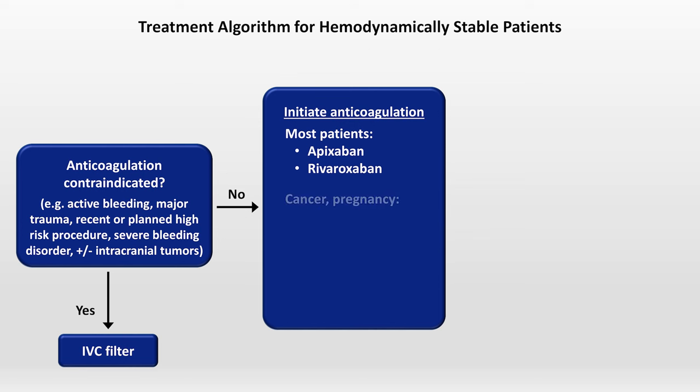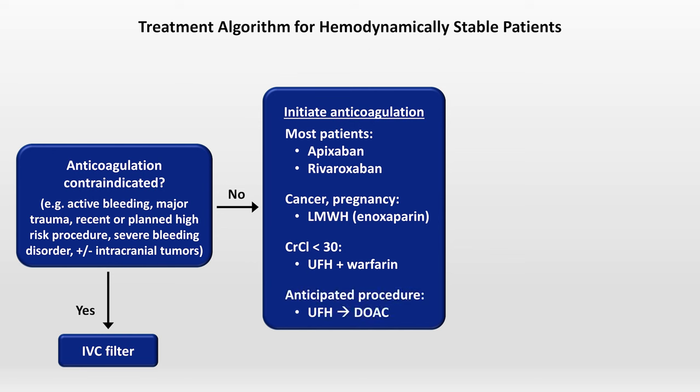In patients with cancer, low molecular weight heparin is believed to be more effective than alternatives. In pregnant patients, low molecular weight heparin is believed to be the safest option. For patients with a creatinine clearance less than 30, the only conventional option is warfarin overlapped with an unfractionated heparin bridge. In patients with an anticipated upcoming procedure, place them on unfractionated heparin, then convert to any DOAC afterwards.